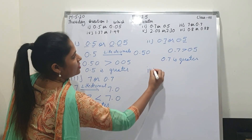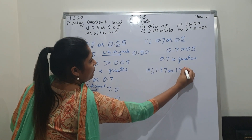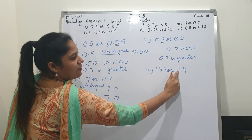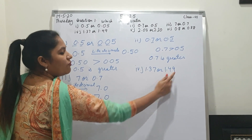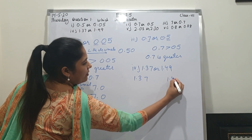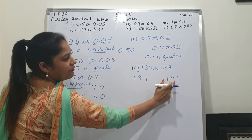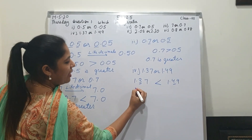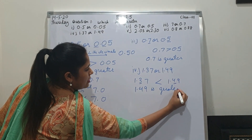Now fourth point, student: 1.37 or 1.49. Again, first we will see the decimal places — after point 2, after point 2. So these are like decimals. Like decimal means same number of places. So 1.37 and 1.49. Again from left: 1, 1 — both are same. Then 3 and 4 — which one is greater? 4. So we will write 1.49 is greater.